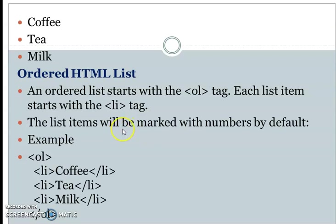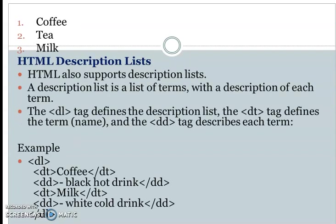In the case of the ordered list, the default element shows numbers. Numbers are listed in the list element. For example, the OL tag starts with a slash OL closing tag, and list elements — LI — represent coffee, tea, and milk. The output shows coffee, tea, and milk numbered 1, 2, 3. This is the ordered list.